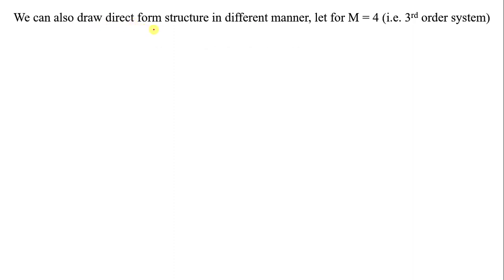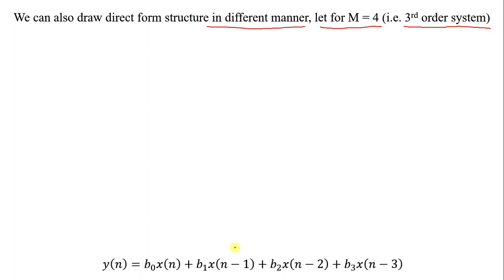We can also draw the direct form structure in a different manner. For simplicity let M equals 4, that is the order of the filter is M minus 1 equals 3, which is a third-order filter. So for a third-order filter the highest delayed term is X(N−3). The previous filter was drawn in horizontal format; now I will draw this filter in vertical format.